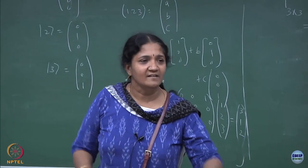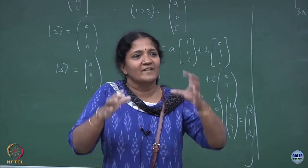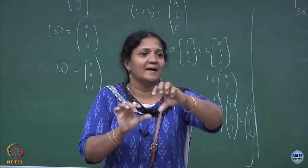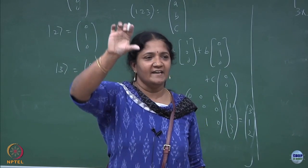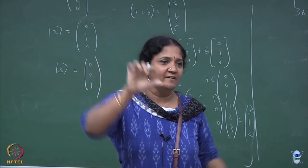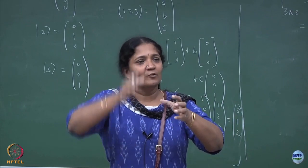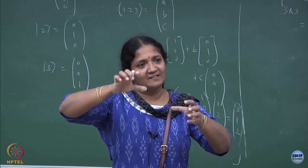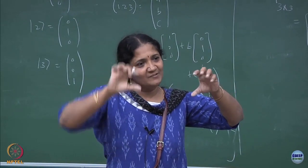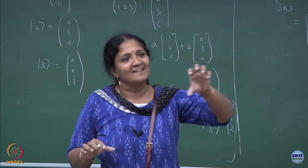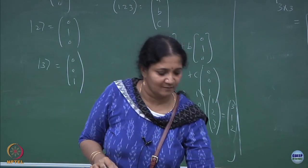It will be a 3×3 matrix because the vector space is 3-dimensional. Whenever you have an x-y component, the corresponding matrix you multiply on the x-y vectors has to be a 2×2 matrix — a 2-dimensional vector space means a 2-dimensional matrix. That is all I am saying.